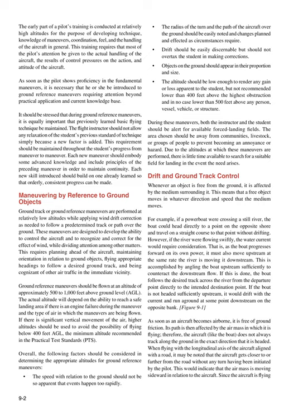Ground reference maneuvers should be flown at an altitude of approximately 500 to 1,000 feet above ground level (AGL). The actual altitude will depend on the ability to reach a safe landing area if there is an engine failure during the maneuver and the type of air in which the maneuvers are being flown. If there is significant vertical movement of the air, higher altitudes should be used to avoid the possibility of flying below 400 feet AGL, the minimum altitude recommended in the practical test standards (PTS). Overall, the following factors should be considered in determining the appropriate altitudes for ground reference maneuvers.